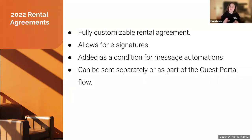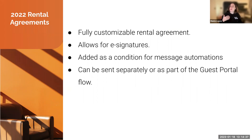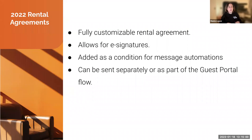Another major release in 2022 was rental agreements — fully customizable templates available on our listing pages. You can use dynamic data from reservations and listings in the template. Most importantly, it allows for e-signatures, so you can send agreements to guests through our automation system for electronic signing. The agreement can be added as a condition for message automation — you can decide whether to send a message based on whether an agreement has been signed, not signed, or if no signature is required.